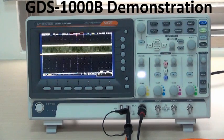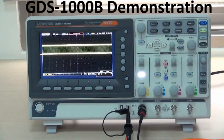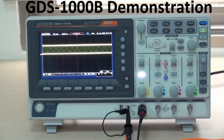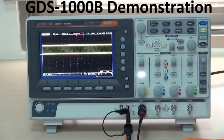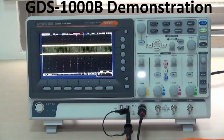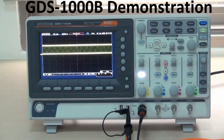First of all, the GDS-1000B series has two bandwidth selections, including 100 MHz and 70 MHz, and the series also features 1 giga sampling per second sampling rate, as well as 10 mega memory depth for each channel.